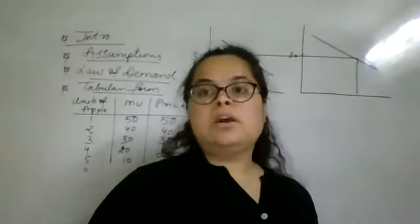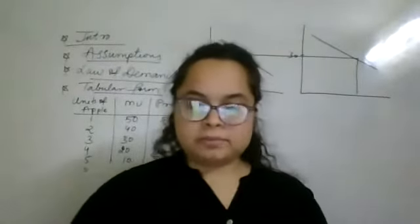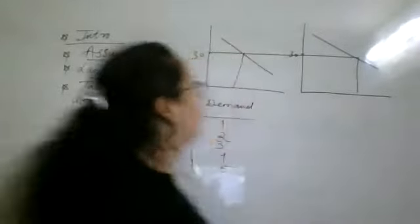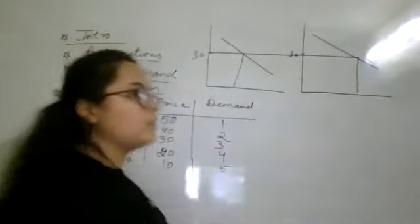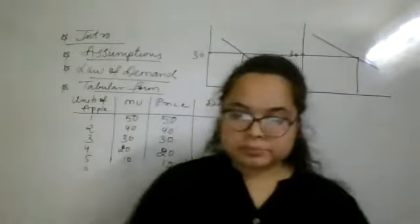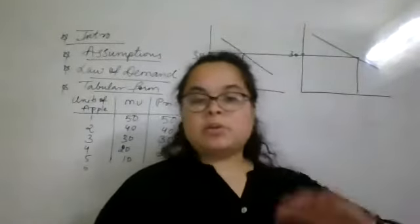So simultaneously we have to make this thing. Marginal utility and demand. How do we make it together? We have to make it together. And then we will tell that we are the same. Okay? So we have told them the graph.